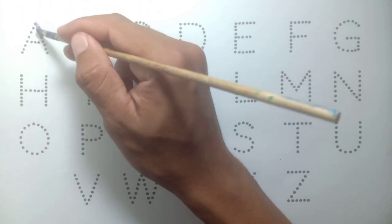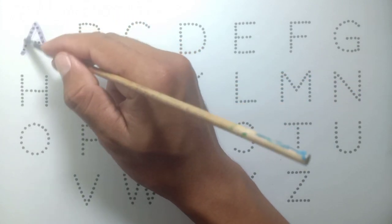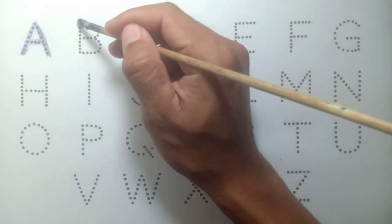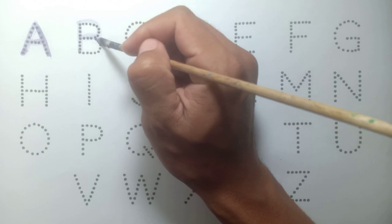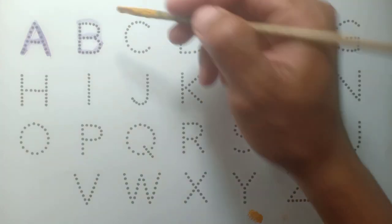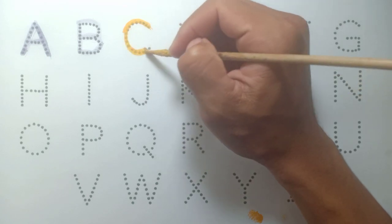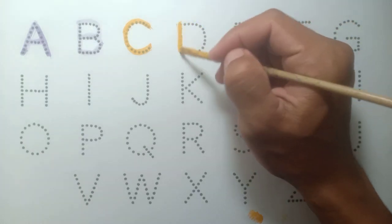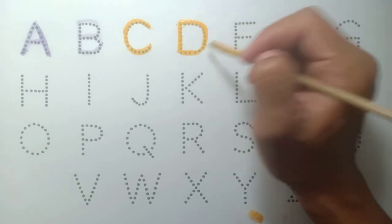Are you ready? A, A for apple, purple color. And B, B for ball, purple color. And C, C for cat, yellow color. And D, D for dog, yellow color.